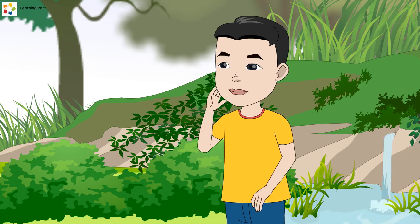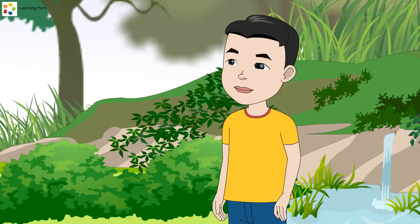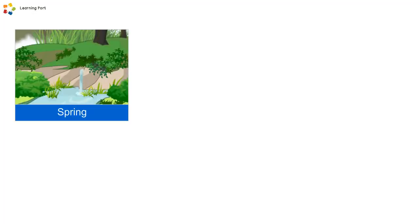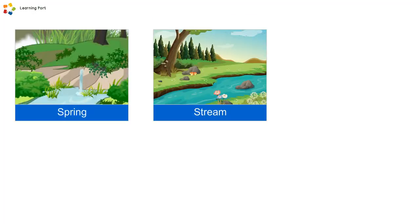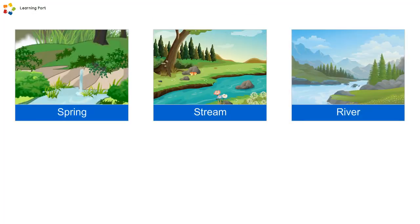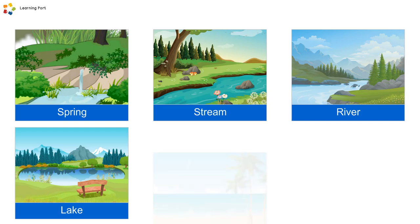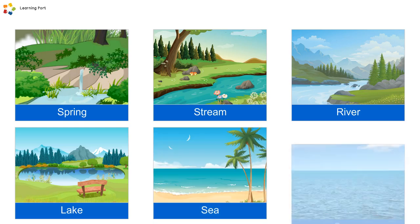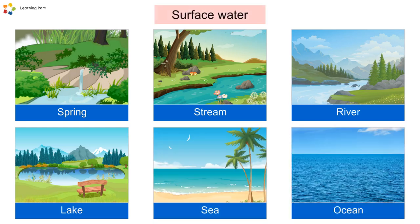"Wow!" exclaims Michael. "I never knew that all these waters are connected." "The water from this spring, this stream, the river, the lake, the sea, and the ocean are all examples of surface water," continues his dad. "Surface water is water on the earth's surface and is visible."